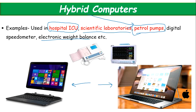So those are the three types of computers based on data handling capability: analog, digital, and hybrid. That was part one. In the next tutorial we will cover the whole topic. Thank you all for watching. If you have any doubts you can ask me anytime.